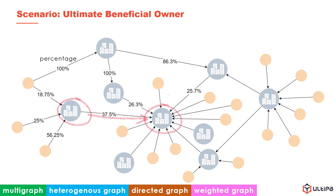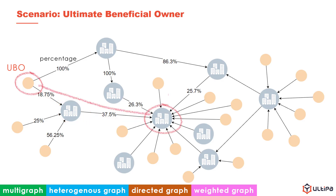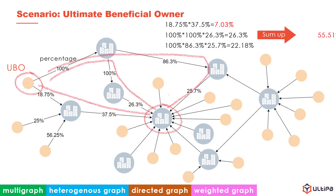If we iteratively track the shareholders from a corporate against the direction of edge, then the ultimate shareholder must be a natural person. This person is called the ultimate beneficial owner, shortened as UBO. A UBO may hide very far from the corporate, but is still intuitive enough to be identified on a graph display. When calculating the total shares owned by the UBO over a corporate, all the shareholding paths should be exhausted. For example, based on a single path, the shareholding percentage owned by this UBO is around 7%, but if all the shareholding paths are calculated, the result is over 50%.